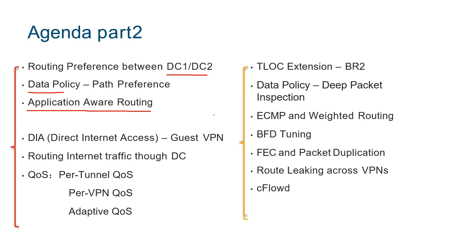AAR dynamically directs traffic to suitable links. Standard DIA isolates visitor traffic using NAT on the guest VPN. Central control handles central issue traffic. In headquarters and branch scenarios, for security, all traffic accesses the internet through the data center — this can be scheduled by policy in SD-WAN.